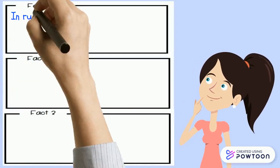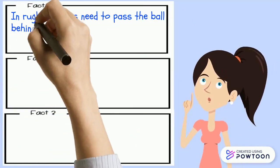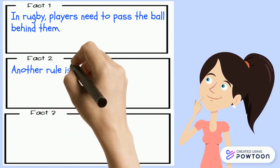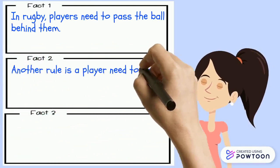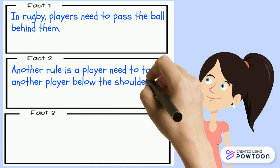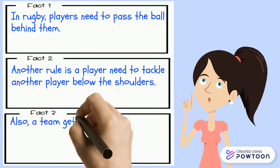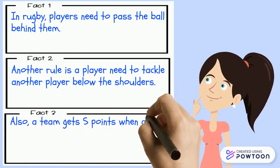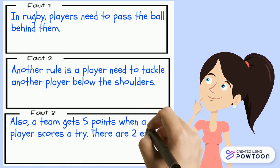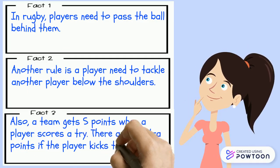In rugby, players need to pass the ball behind them. Another rule is a player needs to tackle another player below the shoulders. Also, a team gets five points when a player scores a try. There are two extra points if a player kicks the ball between the posts.